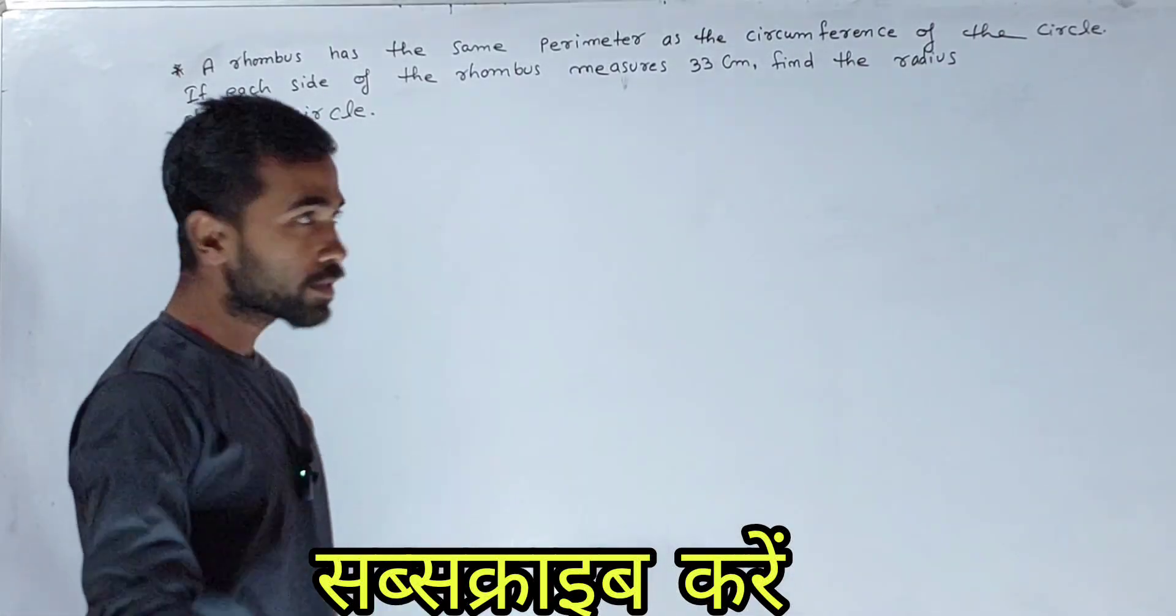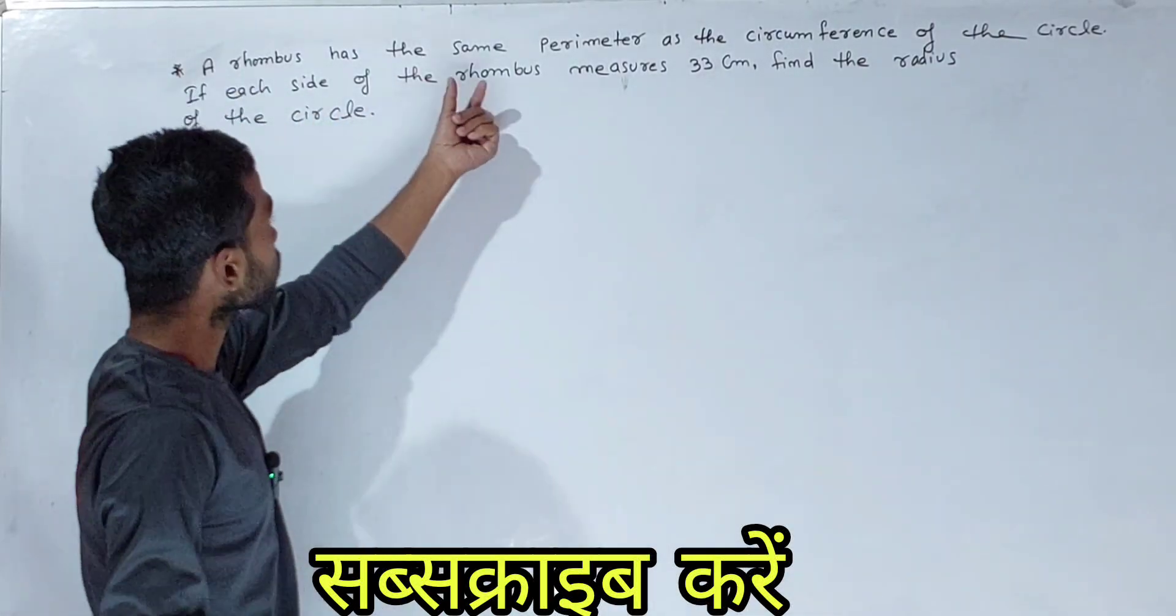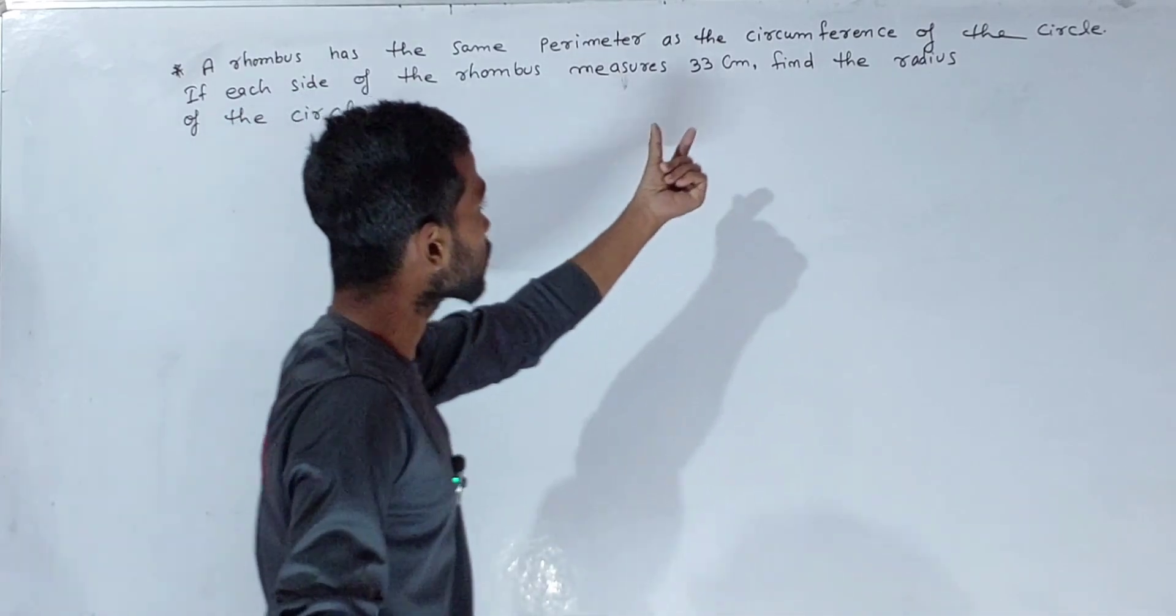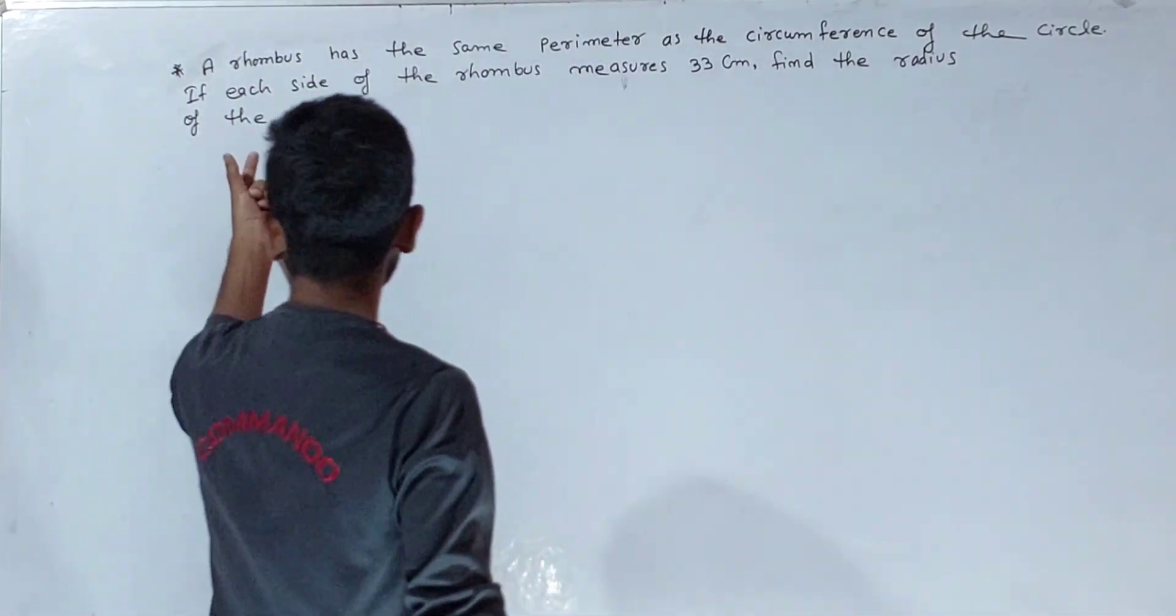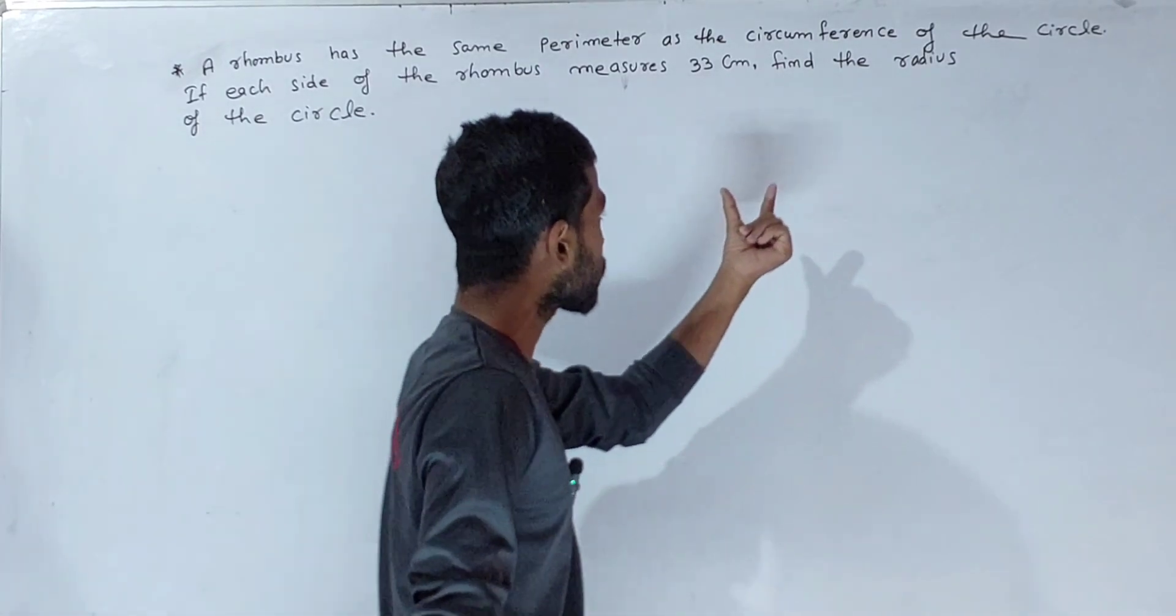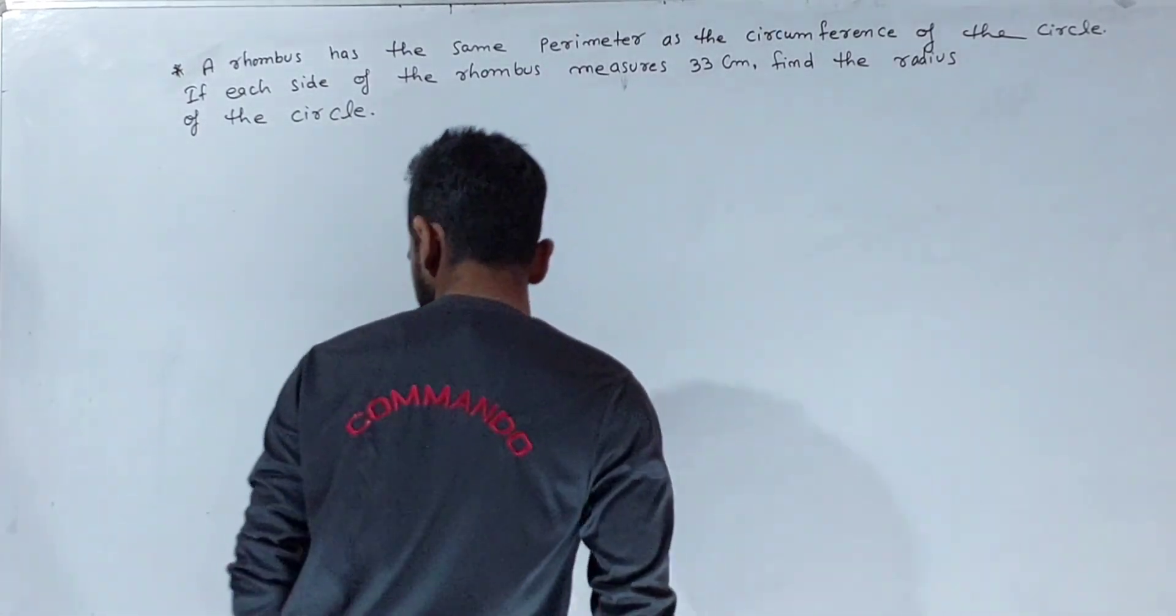Hello. The question is: A rhombus has the same perimeter as the circumference of a circle. If each side of the rhombus measures 33 cm, find the radius of the circle.